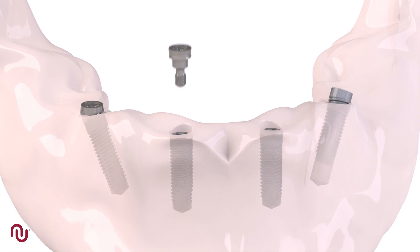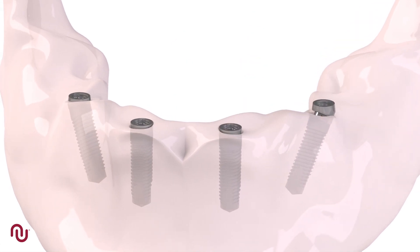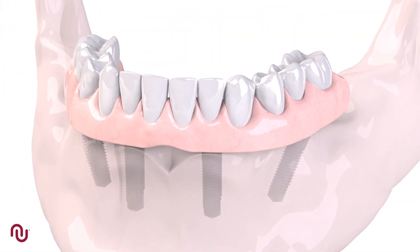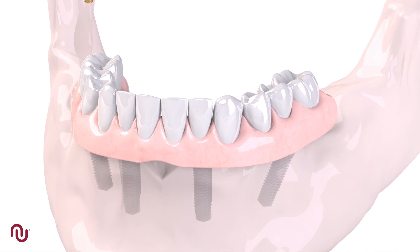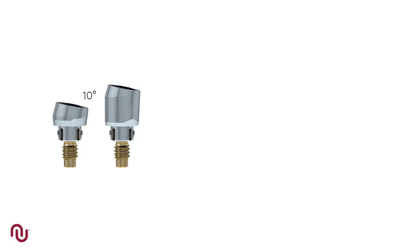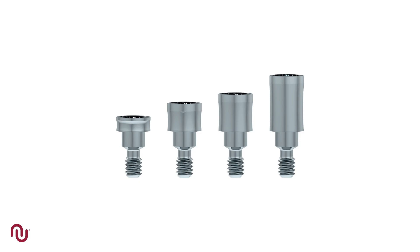The NEOS Access Abutment allows for screw-retained multiple unit restorations on both straight and angled implants. It is not designed for single units. Access abutments come in angles of 10, 20 and 30 degrees in differing colour heights, and the straight access abutment is available in four different heights.